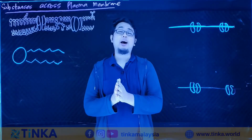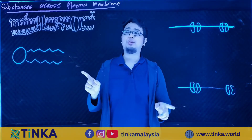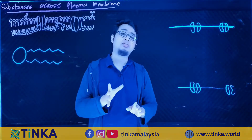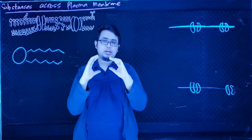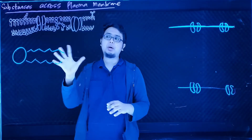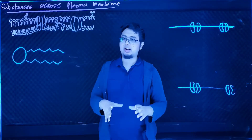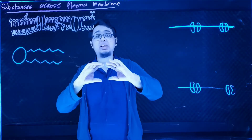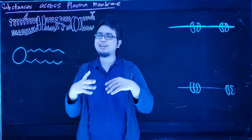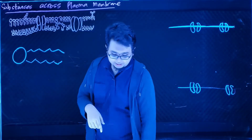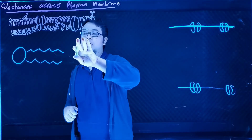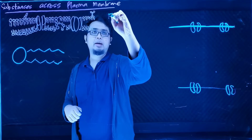We're going to go into Chapter 3, where we'll talk about substance across the plasma membrane. Our focus is mainly on the plasma membrane. The plasma membrane itself is not actually rigid — it's quite fluid. That's why the name of our plasma membrane is the fluid mosaic model.